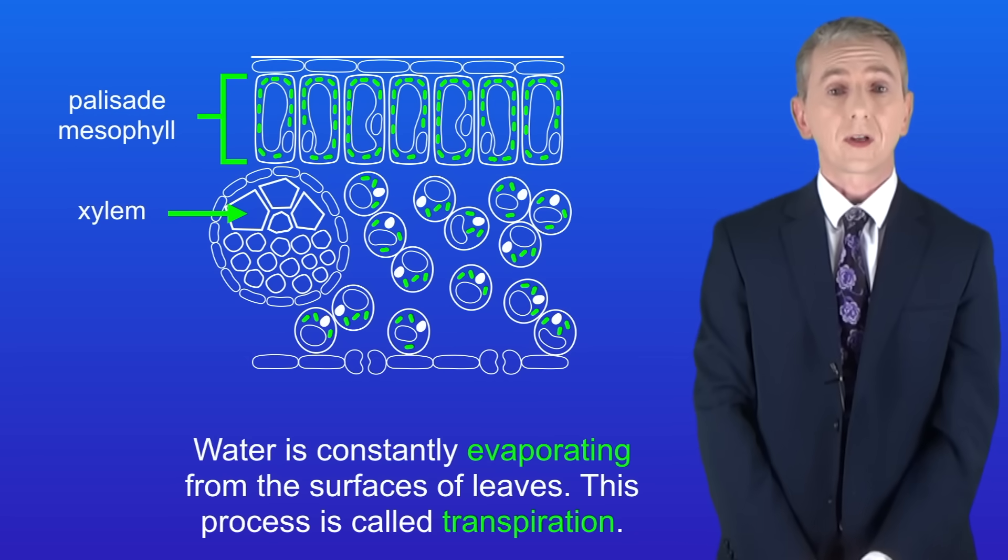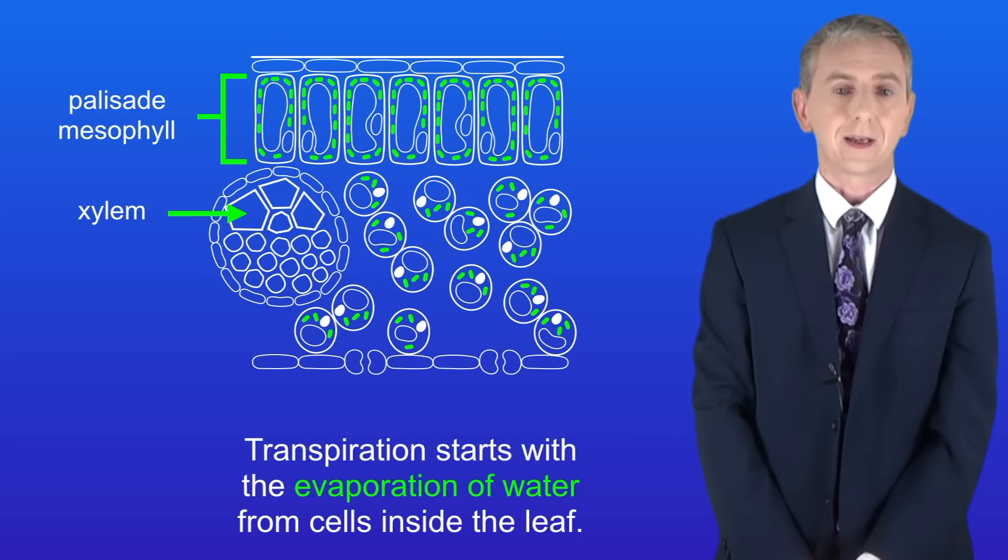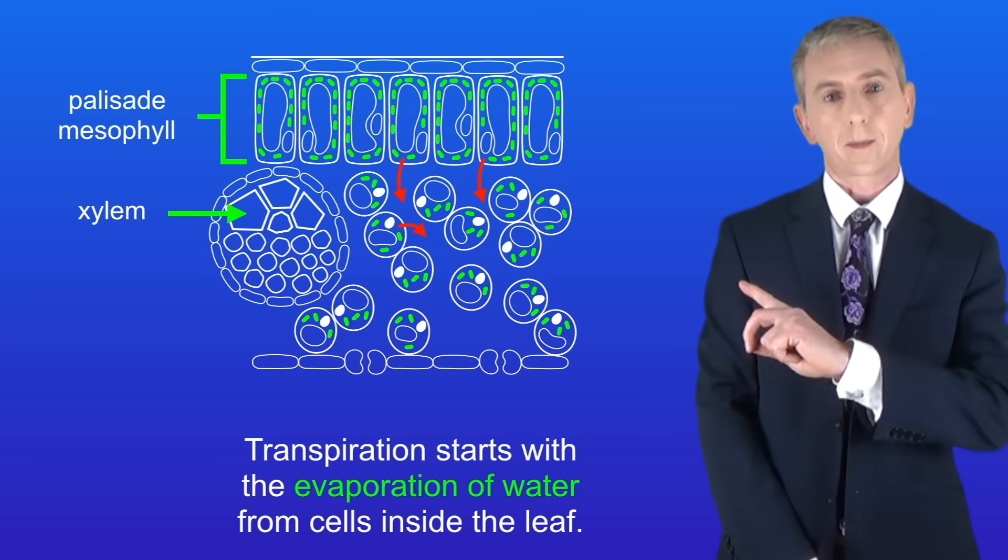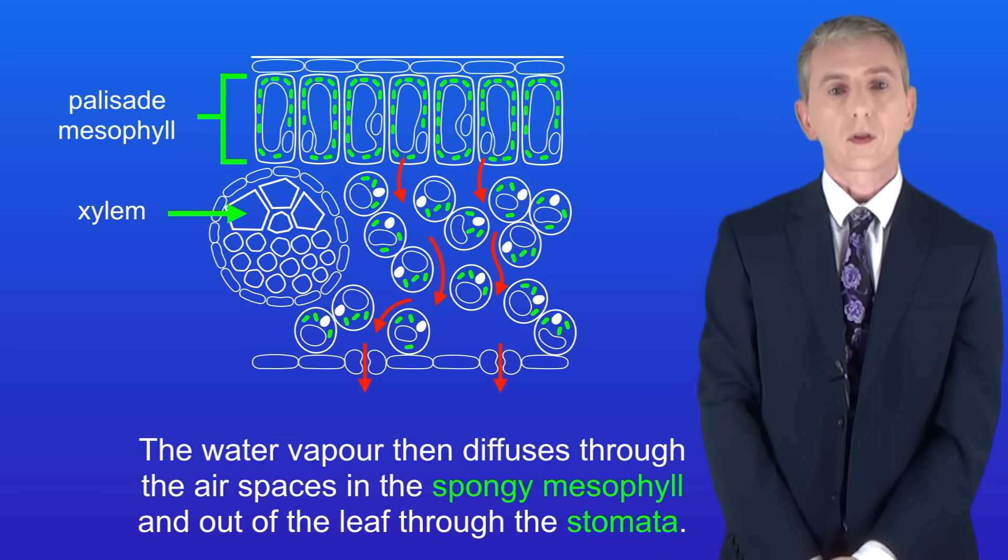Water is constantly evaporating from the surfaces of leaves and this process is called transpiration. Transpiration starts with the evaporation of water from cells inside the leaf. The water vapor then diffuses through the air spaces in the spongy mesophyll and out of the leaf through the stomata.